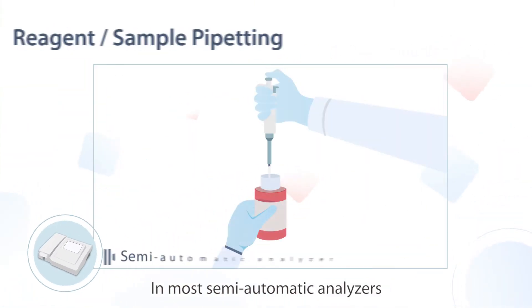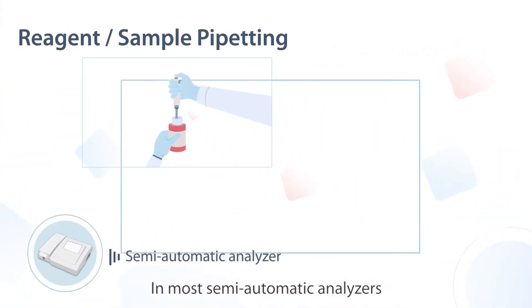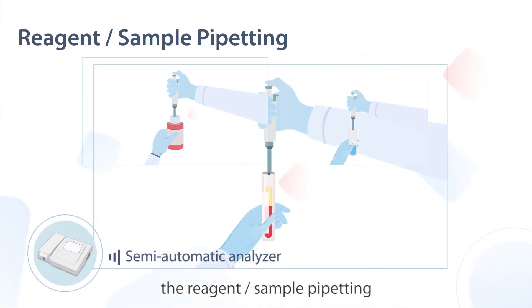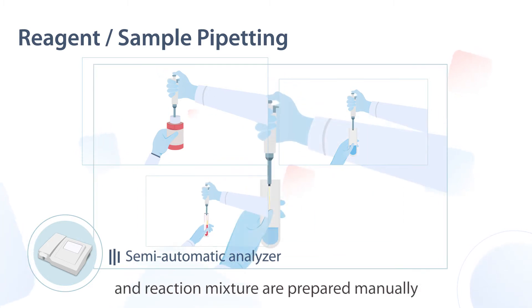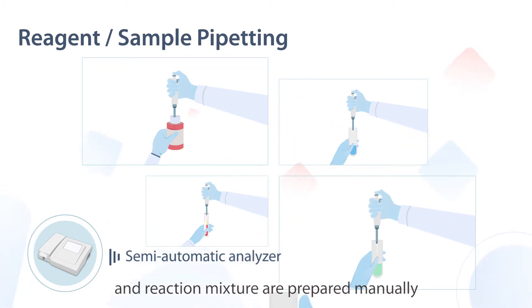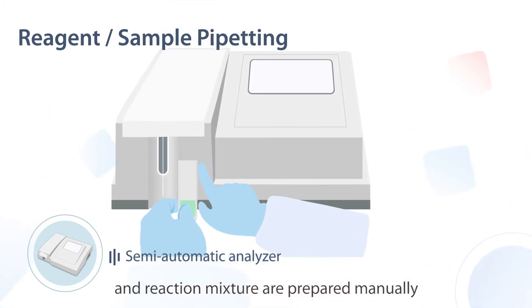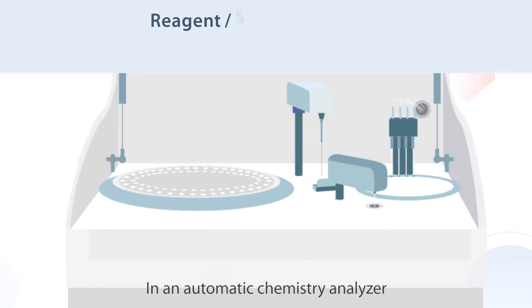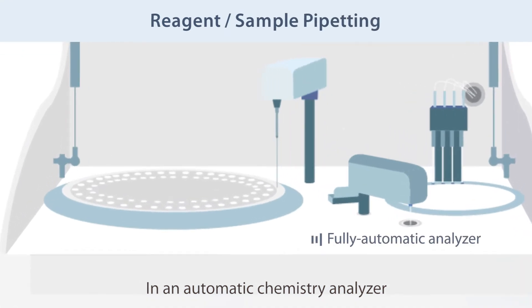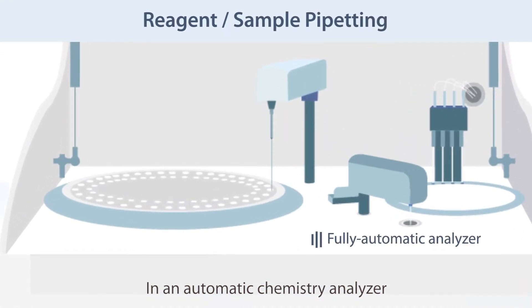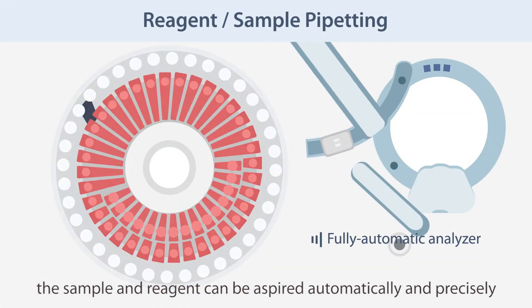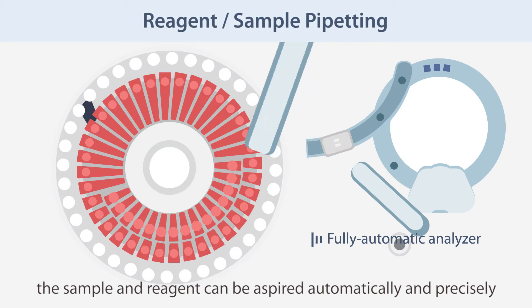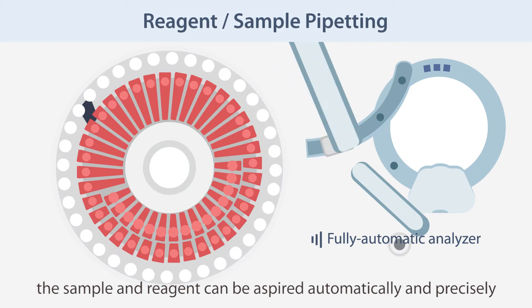In most semi-automatic analyzers, the reagent, sample pipetting, and reaction mixture are prepared manually. In an automatic chemistry analyzer, the sample and reagent can be aspirated automatically and precisely.